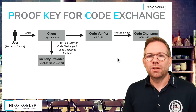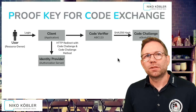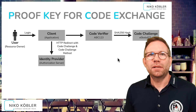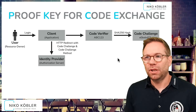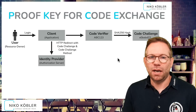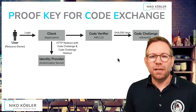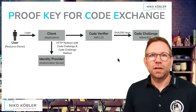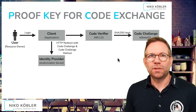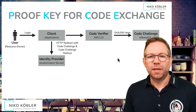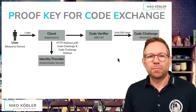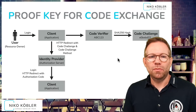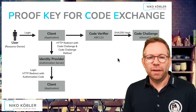We're doing the regular HTTP redirect to the authorization endpoint so the user can authenticate, together with the client ID, the redirect URI, the scopes, and now also the code challenge and the code challenge method. The identity provider checks if this information is available — if not, we get the error message we just saw in Keycloak. If everything is available, the identity provider performs the authentication, the user authenticates, perhaps gives consent, and is redirected back with the authorization code to the client application.